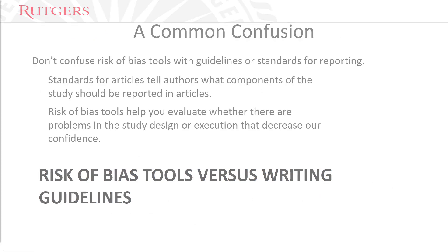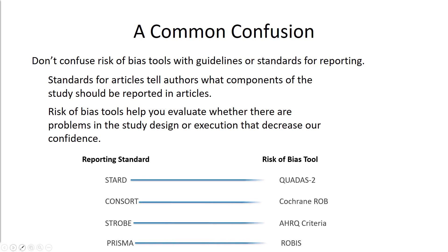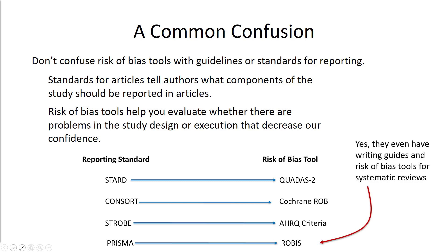I want to make clear there is a difference between risk of bias and writing guidelines — don't confuse the two. Standards of reporting tell authors what components of the study should be reported. Risk of bias tools help you evaluate whether there are problems in study design or execution. For example, STROBE is a reporting standard while the risk of bias tool is QUADAS; CONSORT is for randomized controlled trials while the Cochrane Risk of Bias tool is used for evaluation. There are even both writing guidelines and risk of bias tools for systematic reviews.